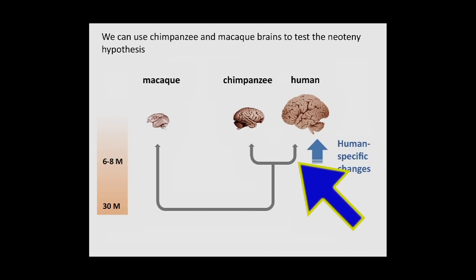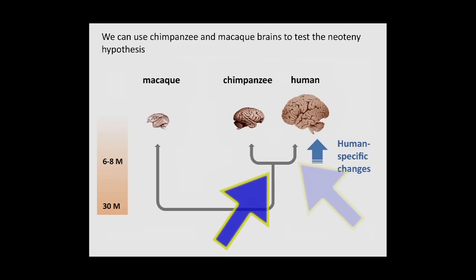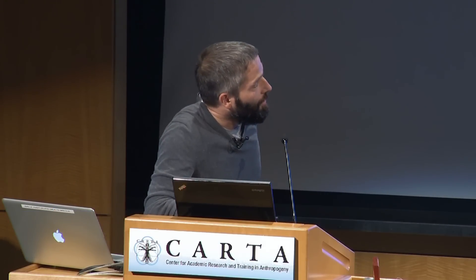So we really want to focus on this very short evolutionary lineage of about 6 to 8 million years, when our ancestors separated from the common ancestors of humans and chimpanzees. And because it's such a short evolutionary time, we can expect that there will be very few molecular changes, developmental changes, so it would be easier for us to study them.